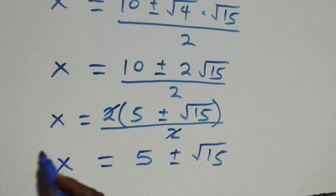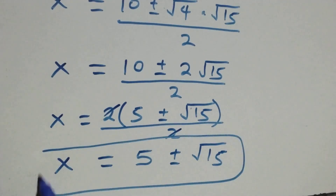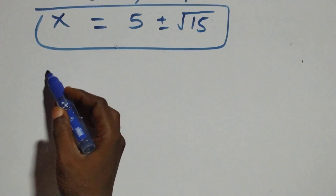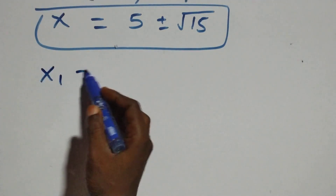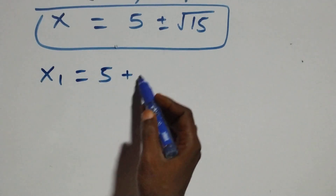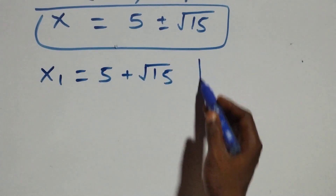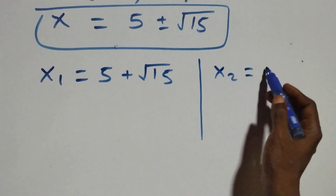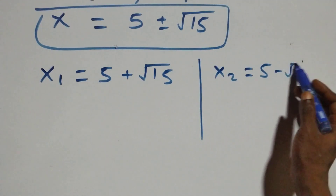So we have two possible values of x: x1 equals to 5 plus root 15, and x2 equals to 5 minus root 15.